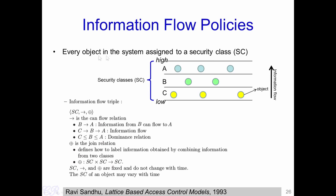In Information Flow Policies, every object in the system is assigned to a particular security class. The system is divided into a fixed number of security classes and each security class is given a particular category. For example, you have a security class which is high, a security class which is low, and so on. Each object in the system is assigned to one of the security classes. Similarly, each subject in the system — the entities which actually operate or access these objects — are also given a particular security class. Next, we will define how information flows between the classes.